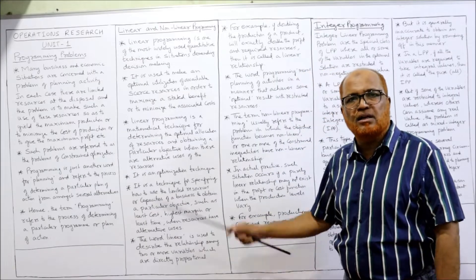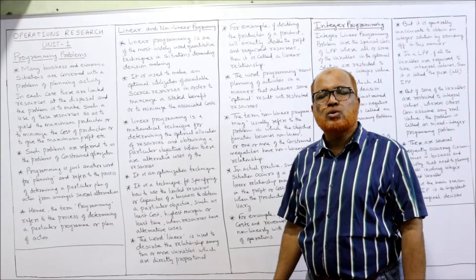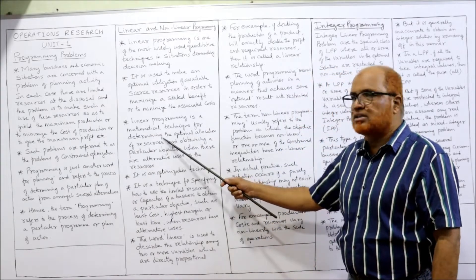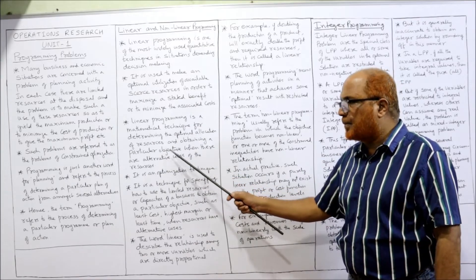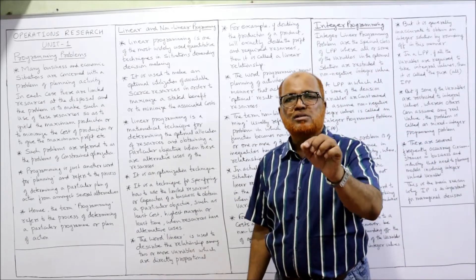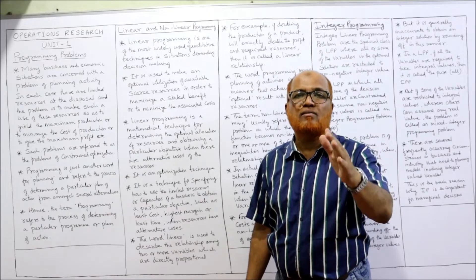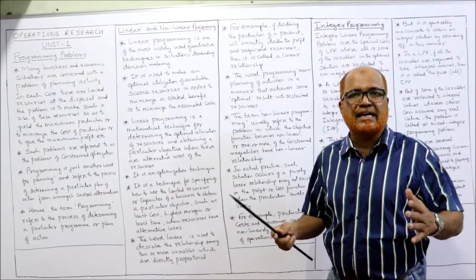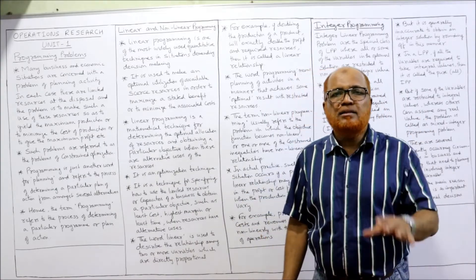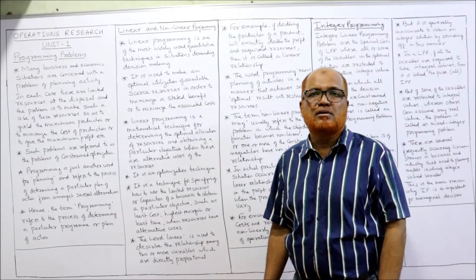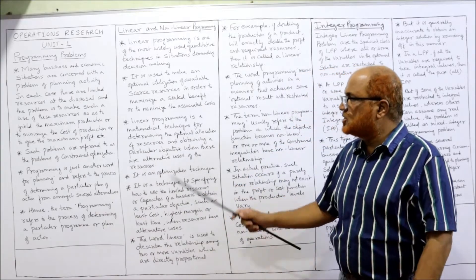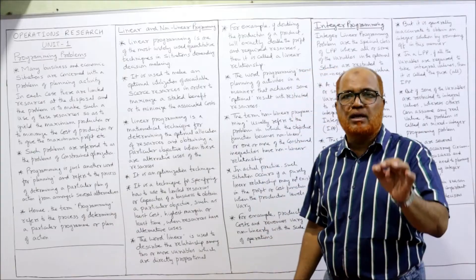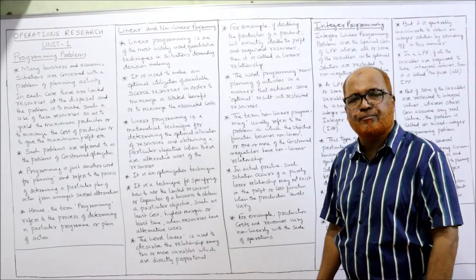Linear programming is a mathematical technique for determining the optimal allocation of resources and obtaining a particular objective when there are alternative uses of resources. Resources are not only scarce but also have alternative uses. For example, money is scarce and can be used in different alternatives. Linear programming is a mathematical technique applied to achieve a given objective when resources are scarce and have multiple uses.